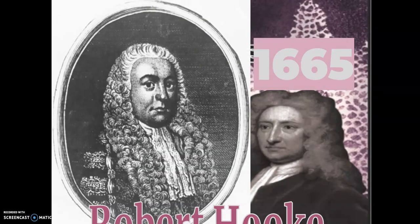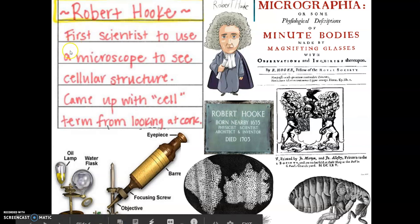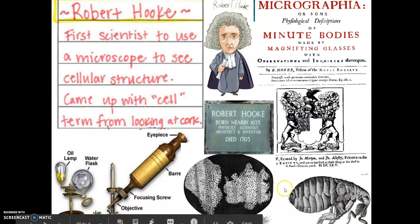First we have Robert Hooke, a pioneer in microscopes. There are a lot of different things we can talk about with Robert Hooke in terms of claims to fame. One of his claims to fame is that he's the first person to use a microscope to see cellular structure. People at the time — and Robert Hooke was no different — they looked at bugs. You can see here, this is one of his drawings. He's also known for his drawings. This is a drawing of a flea that he looked at under the microscope, and that's what people looked at at the time.